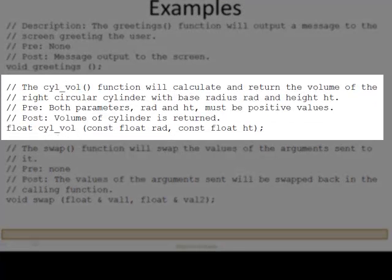The cylinder volume function will calculate and return the volume of the right circular cylinder with base radius rad and height ht. Precondition? Both parameters, rad and height, must be positive values. The postcondition? Volume of the cylinder is returned. Very, very simple.